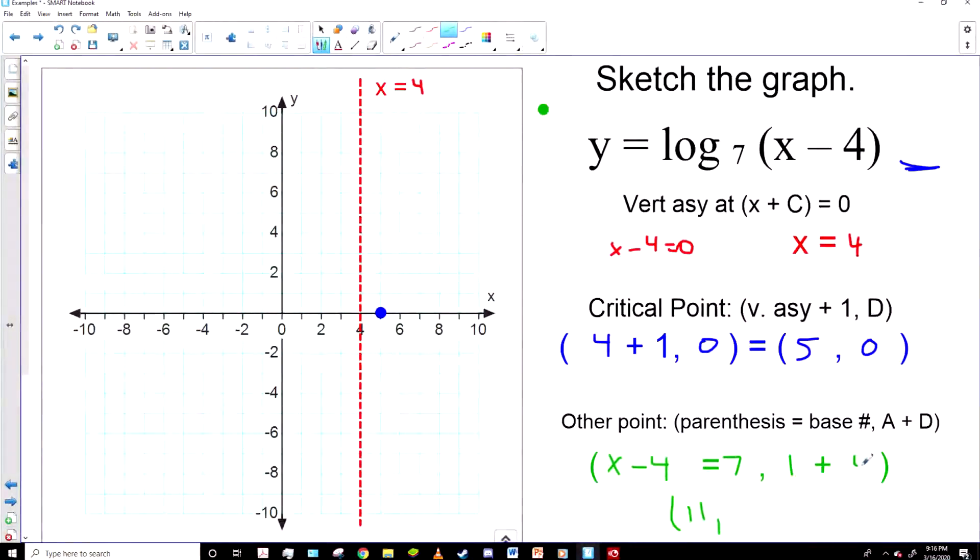And so we get the log part is one, and there is no D term to add to it. A plus D, one plus zero is one.